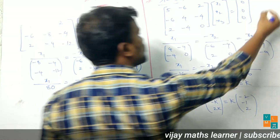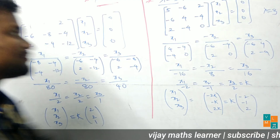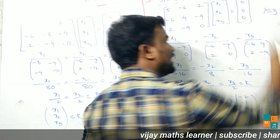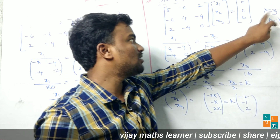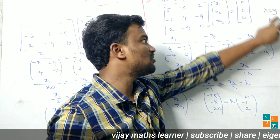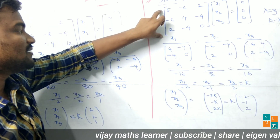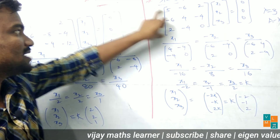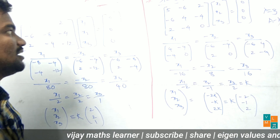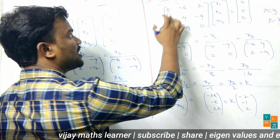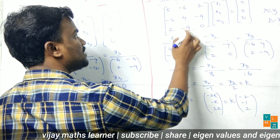Similarly, we find the eigenvector corresponding to eigenvalue lambda equal to 3. Substituting lambda equal to 3 into matrix A minus lambda I, the entries become: 5, -6, 2, -6, 4, -4, 2, -4, 0. We find the eigenvector using (A minus lambda I) times x equals 0.